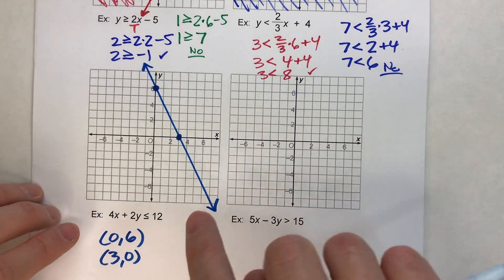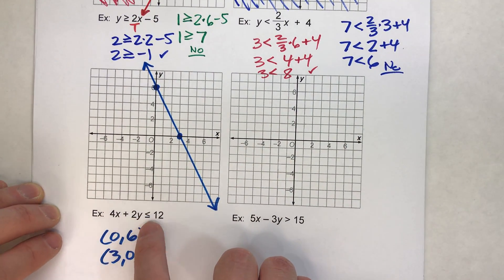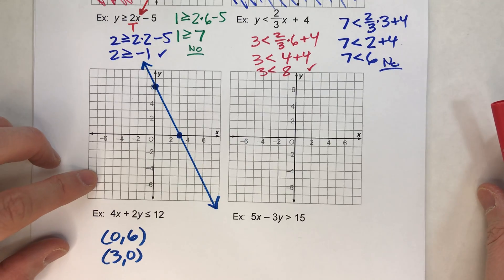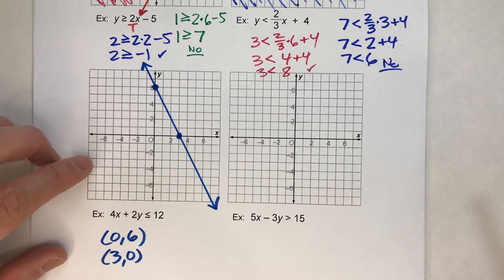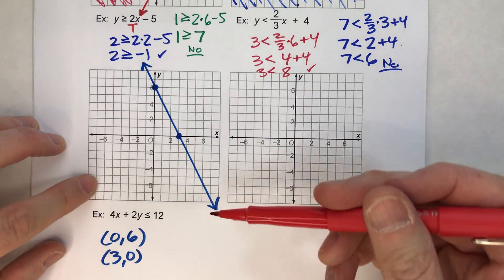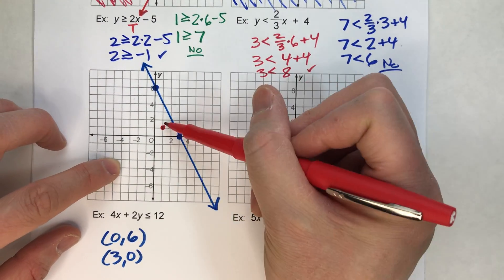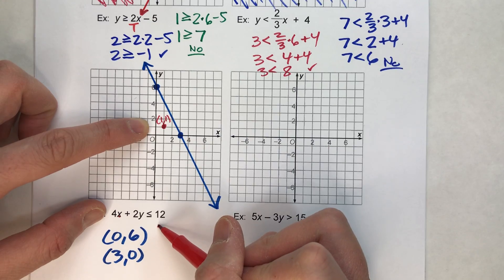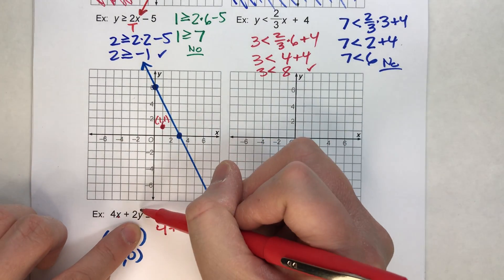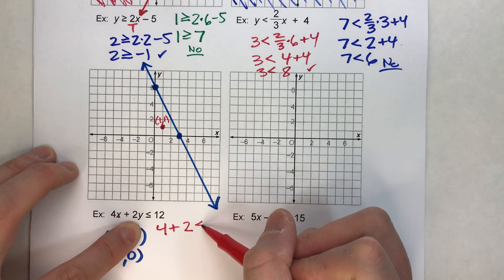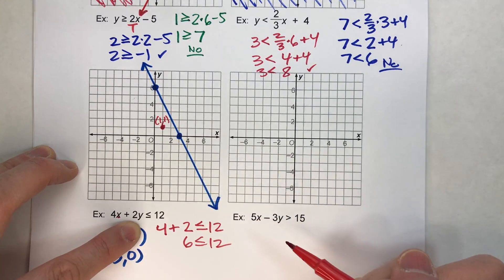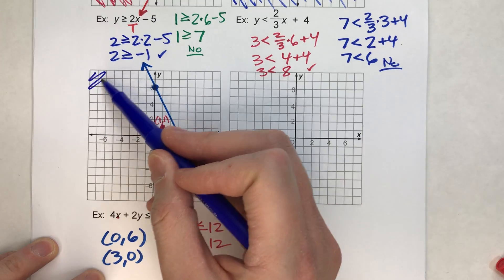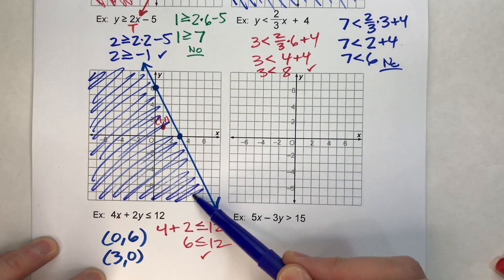I made it solid because it says less than or equal to, so points on the line are a solution. Now, which side do I shade? It says less than or equal to, so I'm thinking down below. But let's check to make sure. I'm going to pick the easy point 1, 1. 4 times 1 is 4, plus 2 times 1 is 2, and that should be less than or equal to 12. Is it? Yeah, it is. So that tells me that's the side I need to shade in.